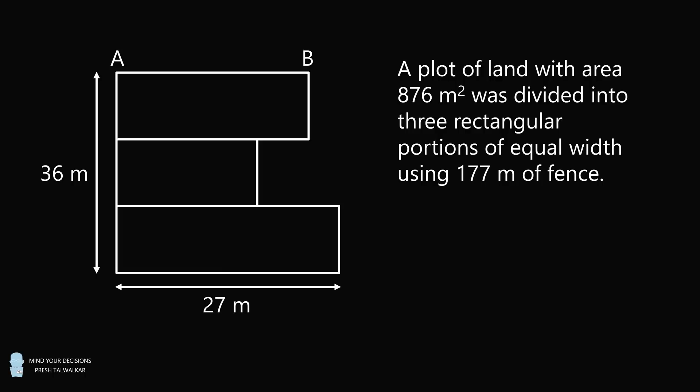So we have a diagram with three different rectangles. The total width of the rectangles is 36 meters, the top rectangle has length equal to AB, the middle rectangle has length that's less than AB, and the final rectangle has the longest length that's equal to 27 meters.